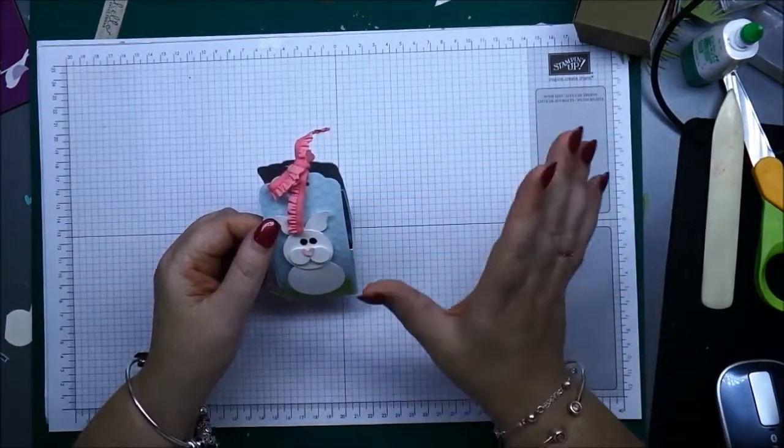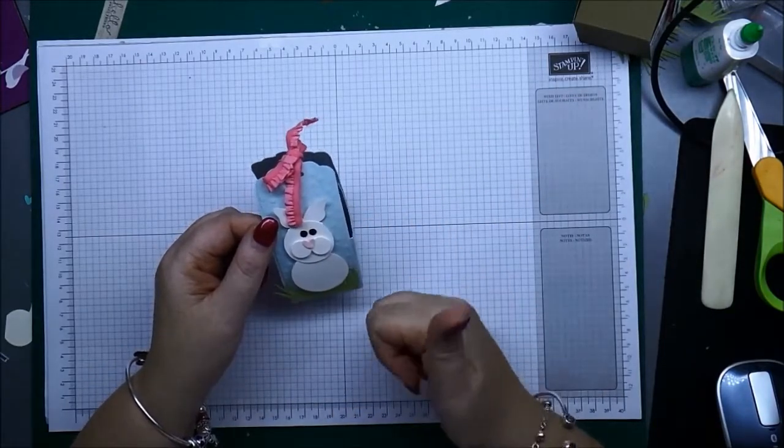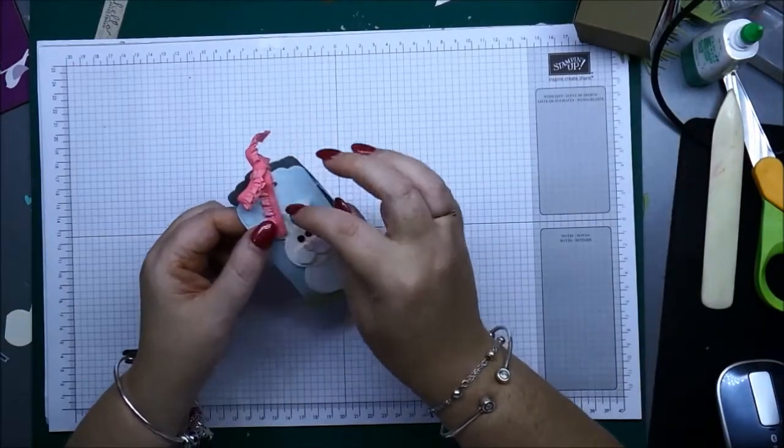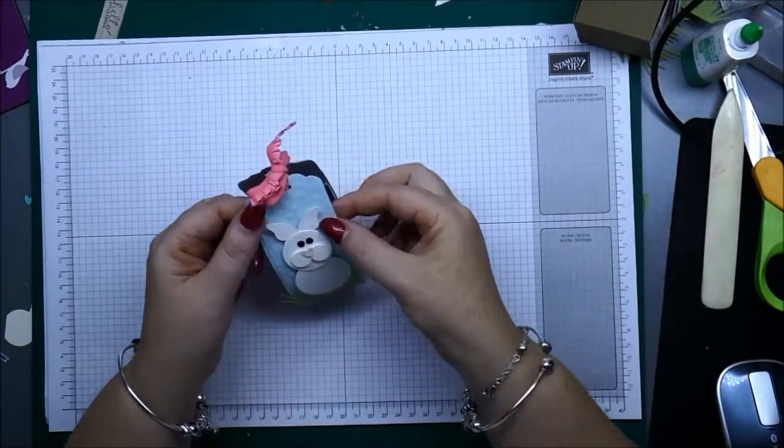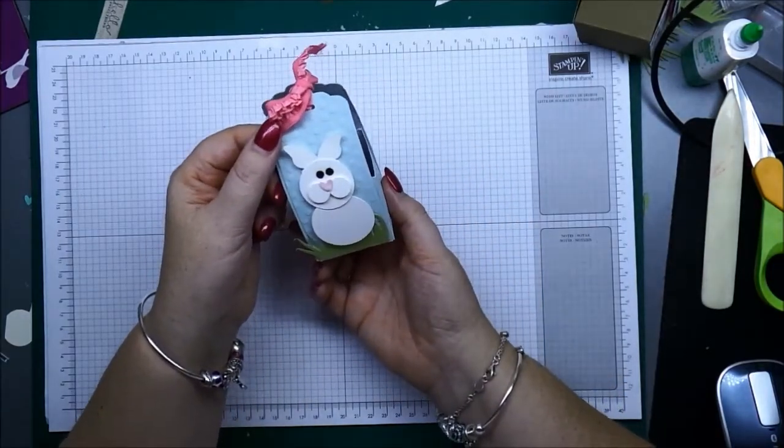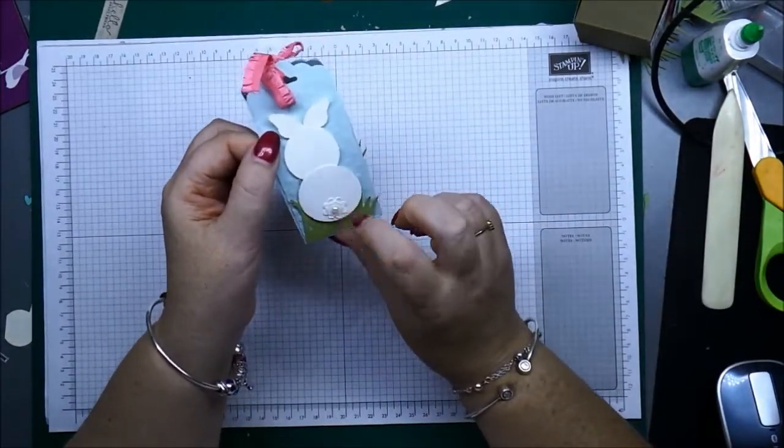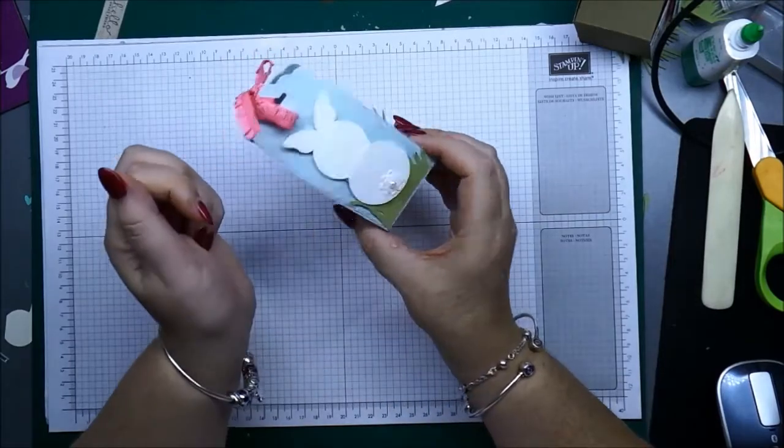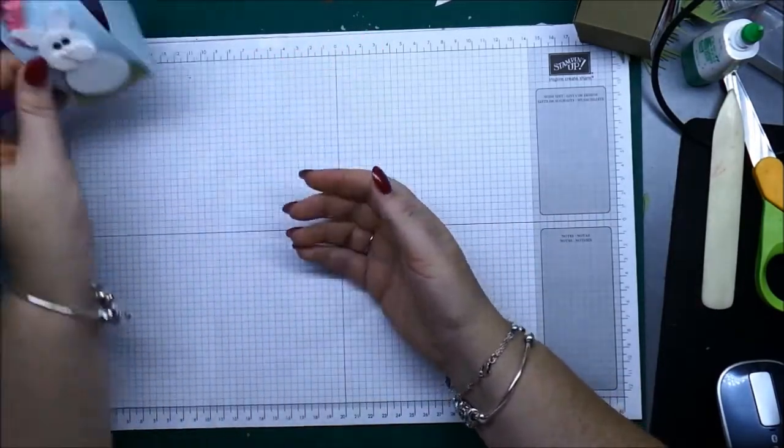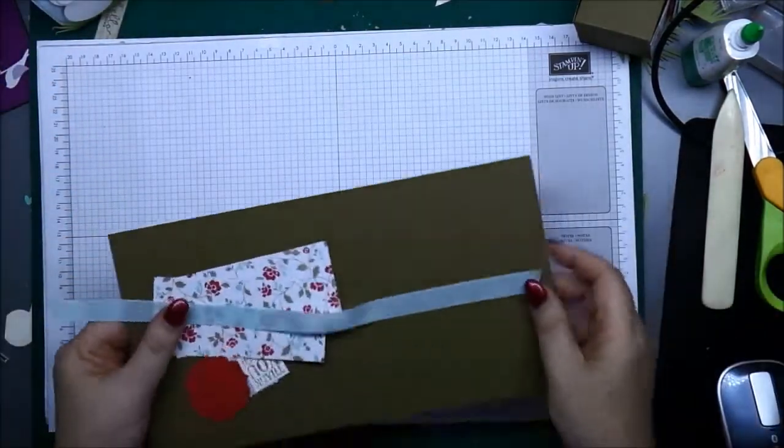And then I found the butterfly of the elegant butterfly punch worked a treat. I've just cut the butterfly in half and just used the top half of his wings to pop behind there. Okay, and then when you turn the box over, same, just the back view of the little bunny and there's the front view again. So very cute indeed.